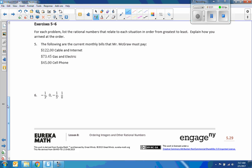For each problem, list the rational numbers that relate to each situation ordered from greatest to least. Explain how you arrived at your order. Right here. Not everybody, but a lot of students ignore that word right there. You get an answer, so you don't explain that and you're going to lose points on an assessment. The following are the current monthly bills that Mr. McGraw must pay. So these are all bills. So they're all negative numbers. So this is negative 122. This is negative 73.45. And the cell phone bill is negative 45.